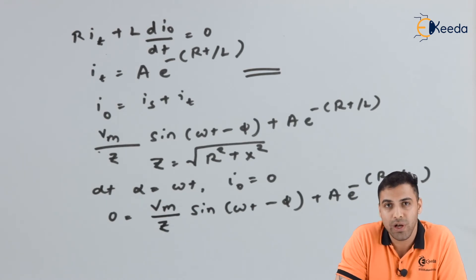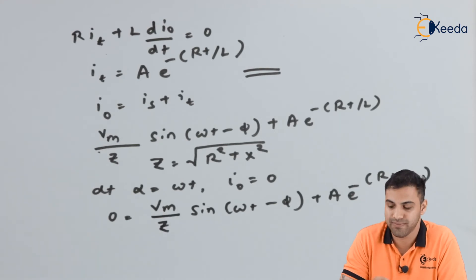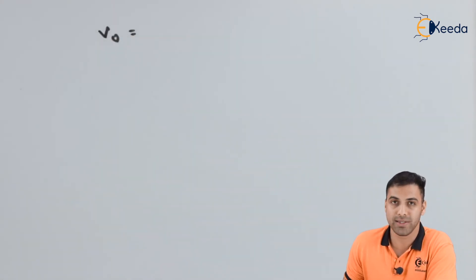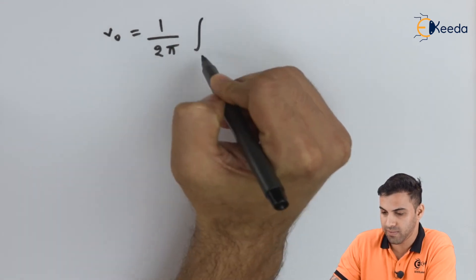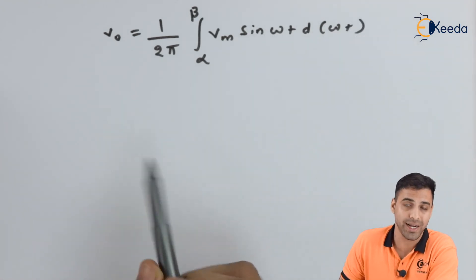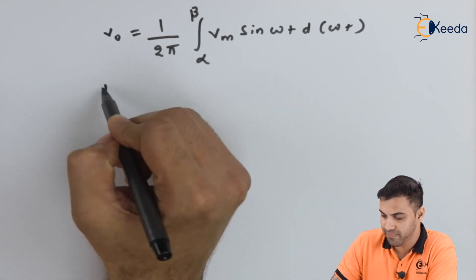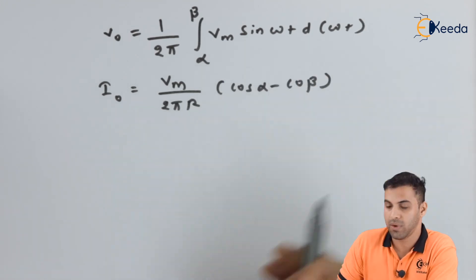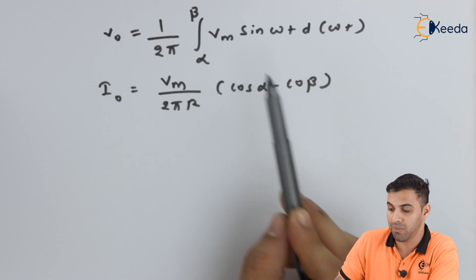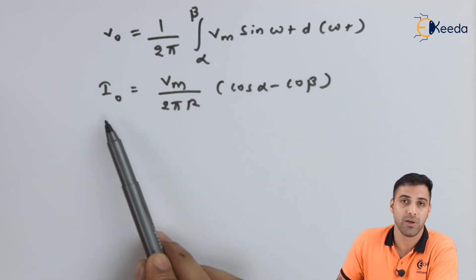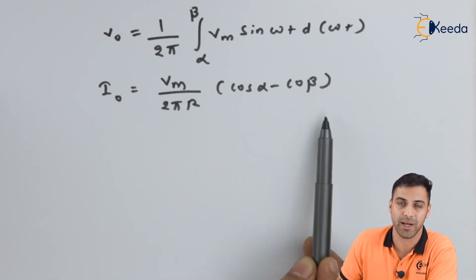Now let's calculate the average value of the output voltage and the average value of the output current. The average output voltage is given by (1/2π) integrated from alpha to beta of Vm·sin(ωt)·d(ωt), since the thyristor conducts during alpha to beta. Solving this equation gives the final average output voltage, and the average output current equals Vm divided by (2πR) multiplied by (cos α − cos β).